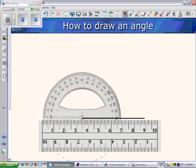And now, let's say we were asked to draw a 60-degree angle, which we know is an acute angle, less than 90 degrees.